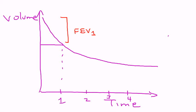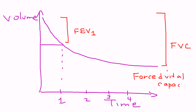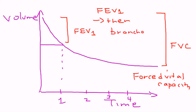The next value measured is when the person completes their exhale — that is FVC, forced vital capacity. In asthma, you measure the FEV1 before giving any treatments, then you administer a bronchodilator treatment. This is a very important diagnostic step.